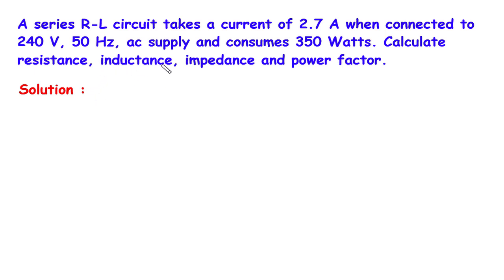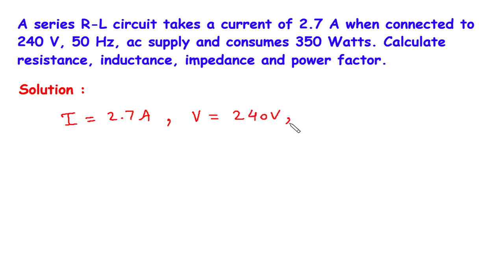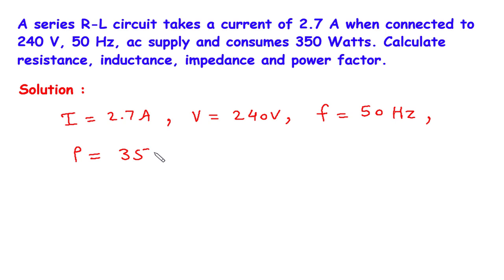Solution. First of all, we will write what is given. The value of current is given: I = 2.7A. The value of voltage is given: V = 240V. The value of frequency is given: F = 50Hz. The AC supply consumes 350W, so the value of power is P = 350W.